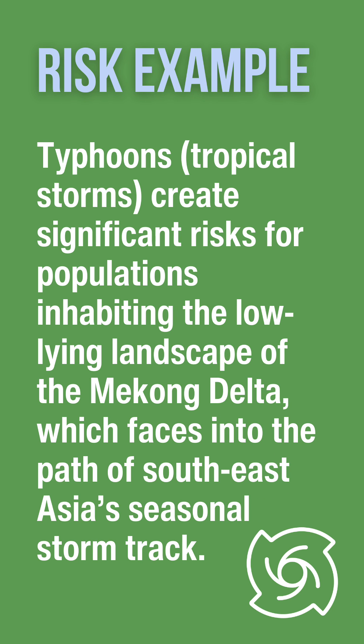An example of risk is how typhoons create huge risks for those populations of the low-lying Mekong Delta in Southeast Asia, which is in the path of seasonal storms between May to November.